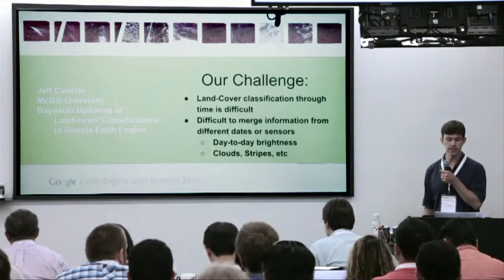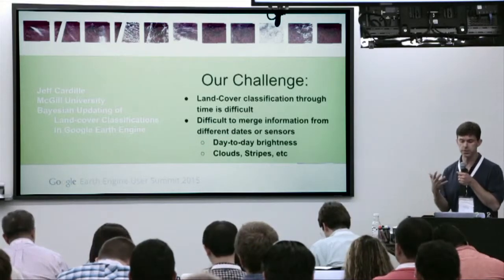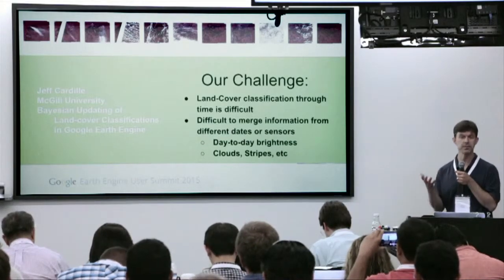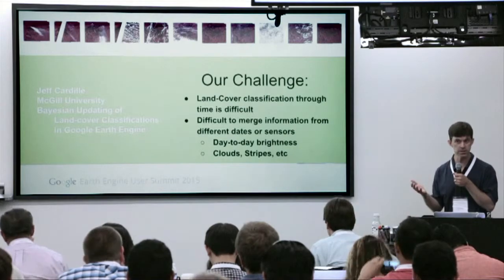The problem for us here is that land cover classification through time is difficult — it's tricky to merge information from different dates and sensors. We have different brightnesses on different days, and as we've heard many times today, there are lots of clouds in many of our images.